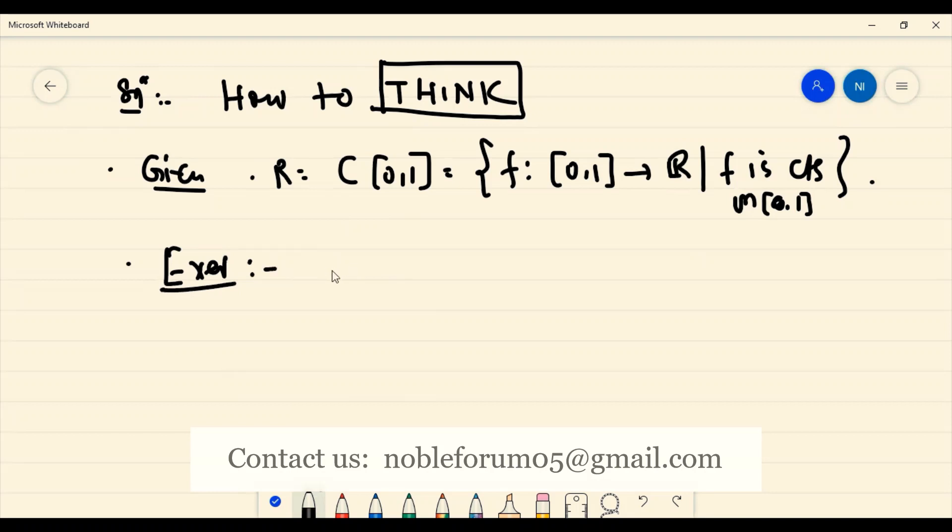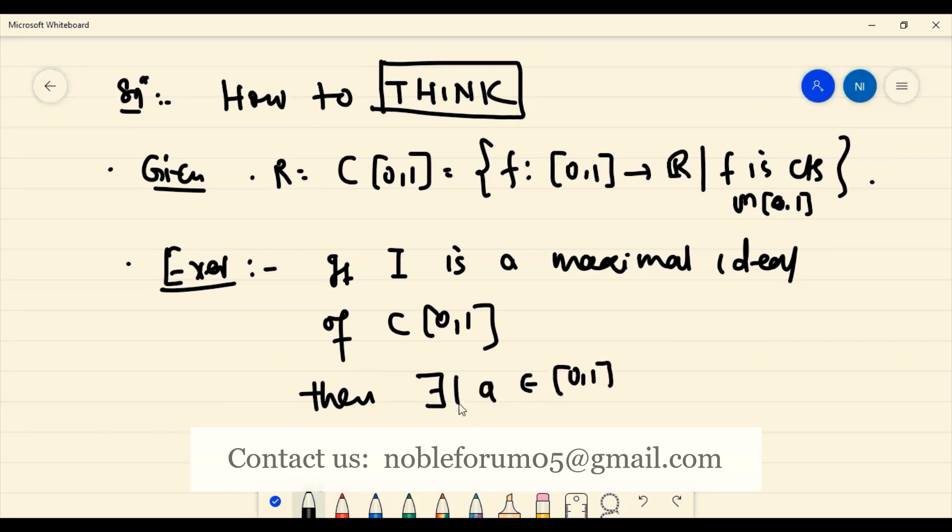For this, first I give you a simple exercise. Prove that: if I is a maximal ideal of this ring C[0,1], then there exists a unique a belongs to [0,1] such that I equals all those f from C[0,1] such that f(a) = 0.